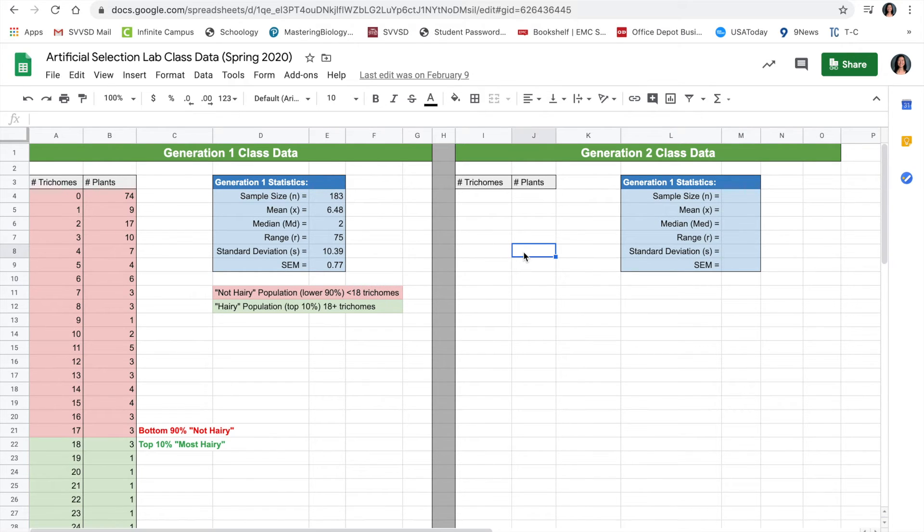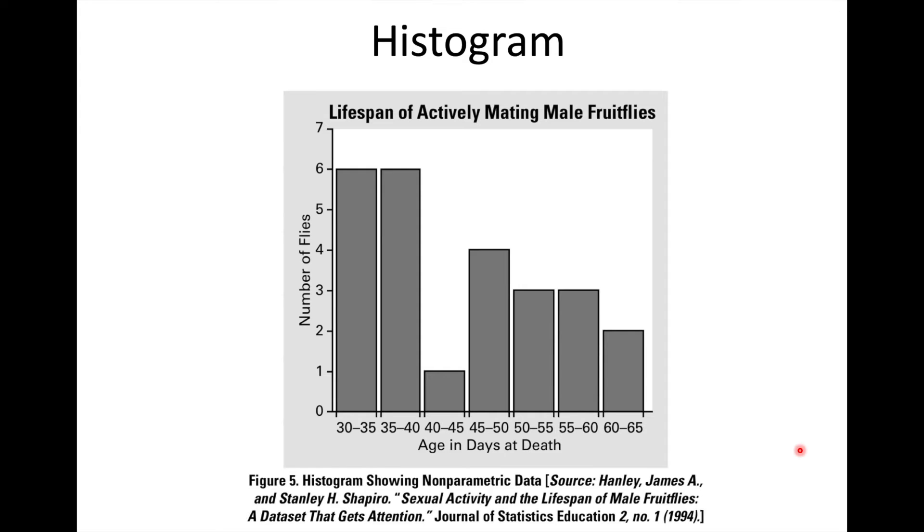Over on the right side was the spreadsheet where we were going to record our generation two class data, but we didn't get a chance to plant those this year. So what do we do with the generation one data? We take the raw data, and we're not going to plot every single little point. Instead, we're going to create a histogram.